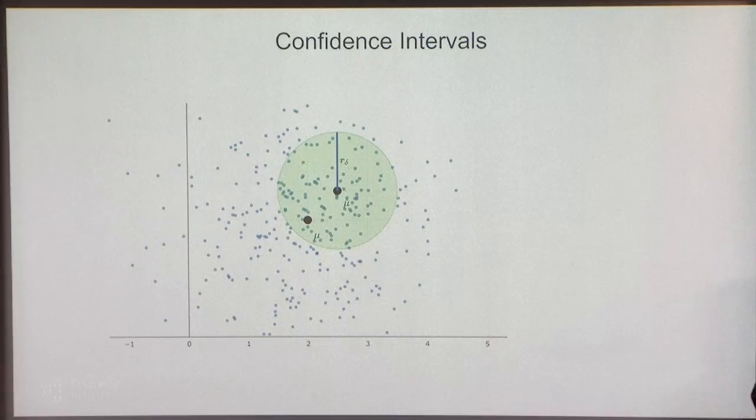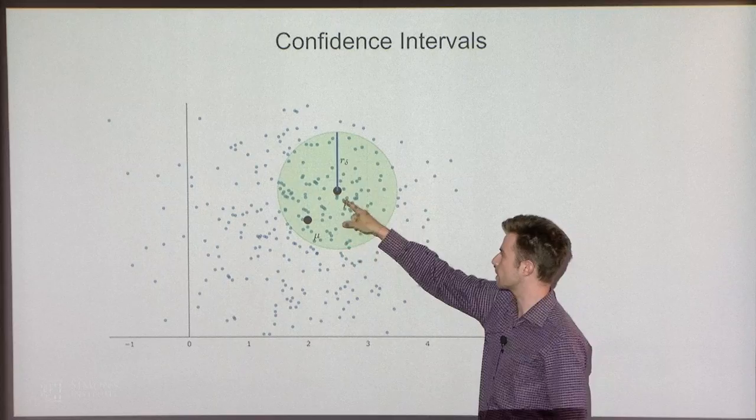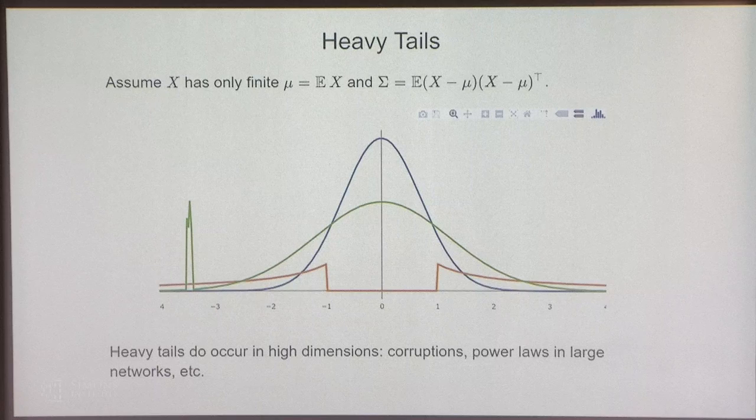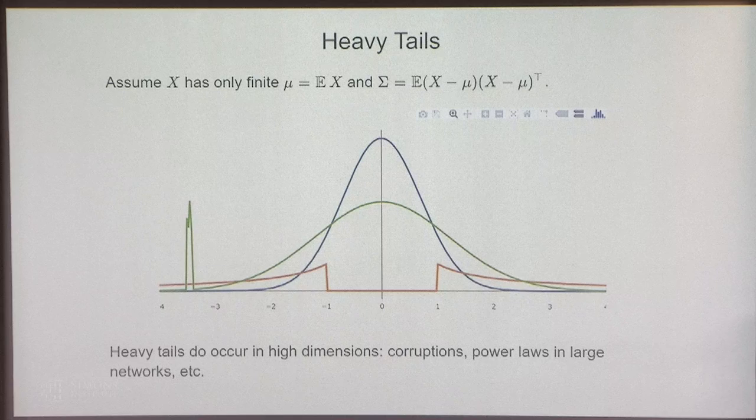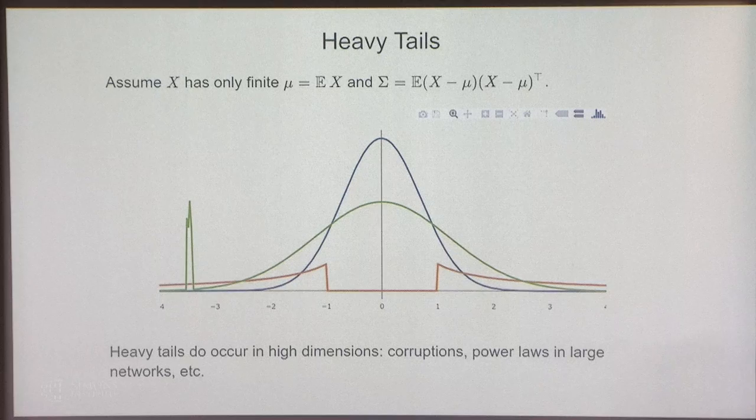Here's the picture in case you've never seen a confidence interval before: here's the population mean of some data, here's my estimator, and I've won the game because I decided r-delta was this radius ball. Confidence intervals have been studied for a long time, so what can there possibly be new to say? It turns out that confidence intervals and the empirical mean don't play well together when the underlying distribution x has a heavy tail.